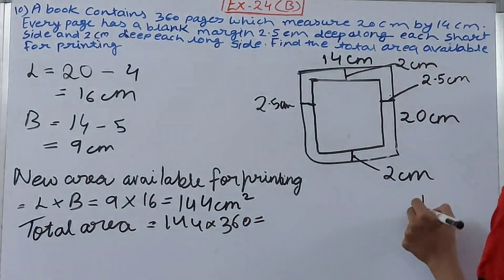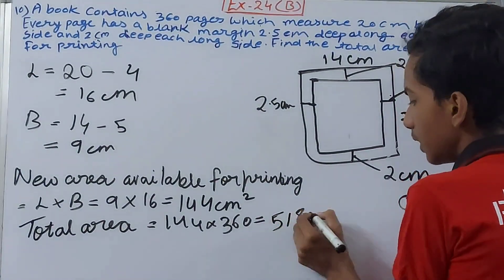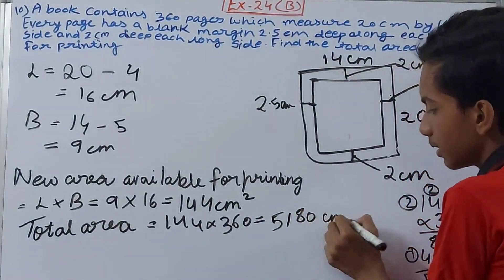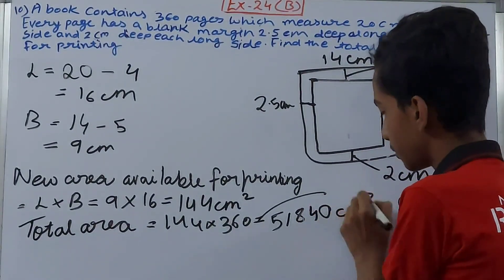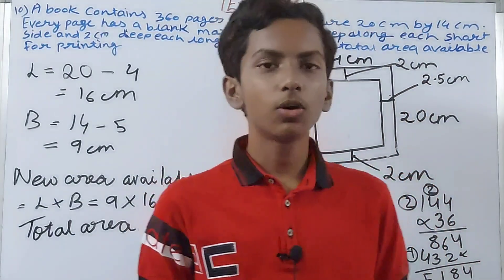So our total area will consist of the entire 360 pages. So 144 into 360. What will this give us? Let's see, 144 into 360, this will be 51,840 square centimeters. Right, this becomes our total area.